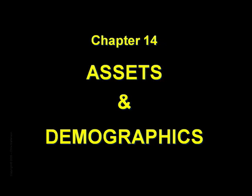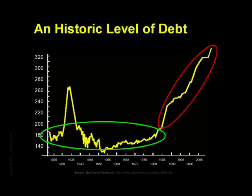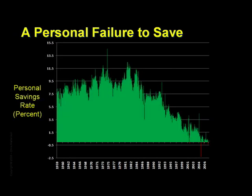Chapter 14: Assets and Demographics. As we learned in previous sections, our nation has historic, never-before-seen levels of debt, and an historic failure to save. Now, some would say it's not reasonable to look only at debt and savings — one also has to consider assets.